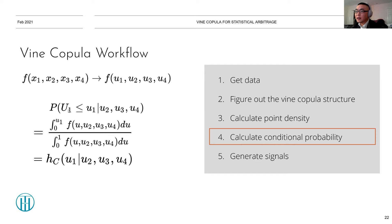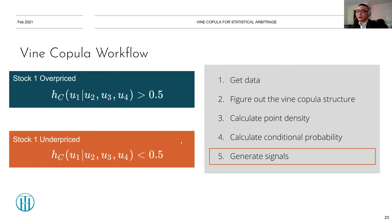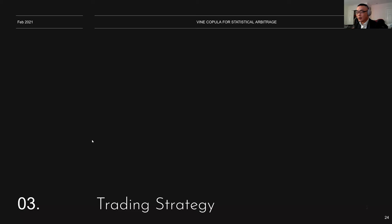Then calculate the conditional probability by cumulatively integrating over the target stock. Here you calculate density on the quantiles rather than the actual margins, and divide by the normalization to find HC. Notice that this conditional cumulative probability is model-dependent — it depends on the copula type and vine structure you're using. Then generate signals: if HC is greater than 0.5, stock one is overpriced; if HC is less than 0.5, stock one is underpriced. Trade based on that information.